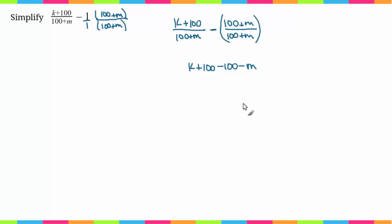So now in the numerator we can go ahead and cancel these out because 100 minus 100 is just 0. And then we're left with k minus m over 100 plus m.